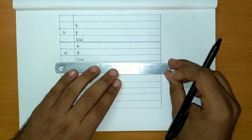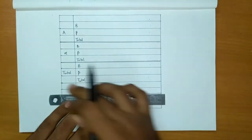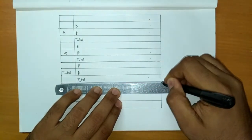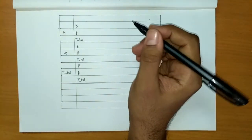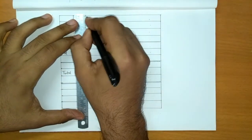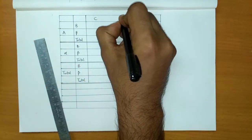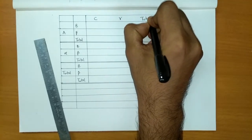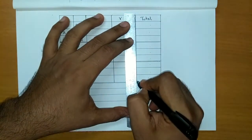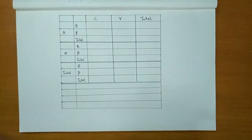So we have the A block, then the Alpha block, and last is the Total block. Now for attribute C, we draw another line and write C, Gamma, and Total. This completes the table. Basically you have 10 lines here — 3, 6, 9, and the top line is the 10th line.